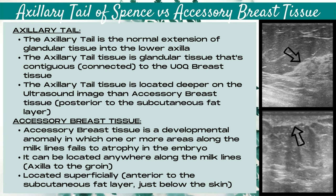Accessory breast tissue is a developmental anomaly in which one or more areas along the milk lines fails to atrophy in the embryo. Accessory breast tissue can be located anywhere along the milk lines, from the axilla all the way down to the groin. This tissue is located superficially on the ultrasound — it's anterior to, or above, the subcutaneous fat layer and just below the skin line.